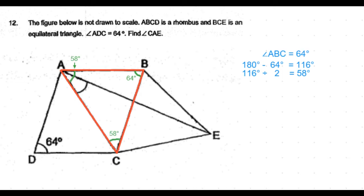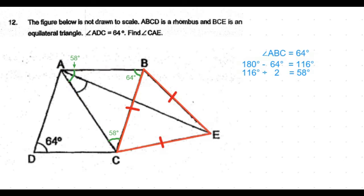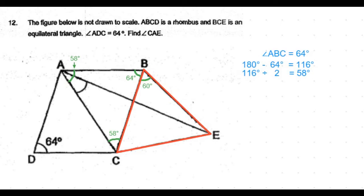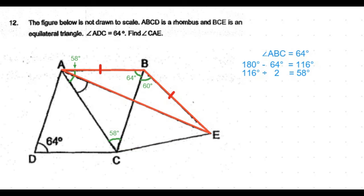Now consider triangle BCE. This is given as an equilateral triangle, which means all the angles are 60 degrees. And so angle CBE is also 60 degrees.